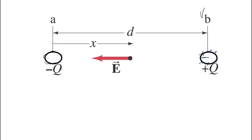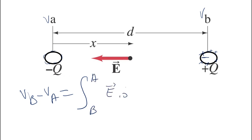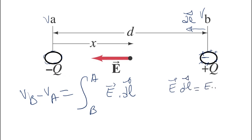The definition of electric potential between point B and A, we call it VB minus VA, will be the integral from B to A of E · dL. The displacement will be from B to A. We need to find the direction of the electric field, because E · dL equals E dL cosine of theta. At this point, we call the position X.